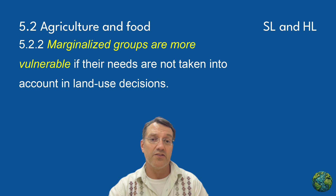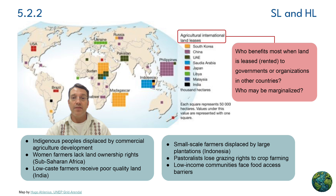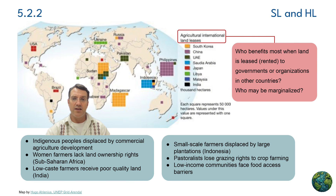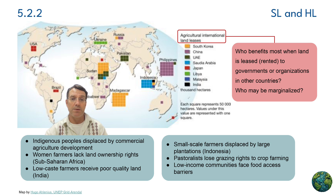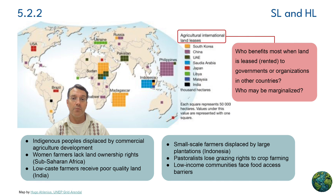This isn't just about fairness — it's about understanding how land use decisions affect different people differently. This map shows international land leases, essentially land grabbing, where governments or organizations from one country lease large areas of agricultural land in another country. The key questions we need to ask are who benefits most from these arrangements and who gets marginalized. Often we'll see indigenous peoples displaced by commercial agricultural development, women farmers losing land ownership rights in places like sub-Saharan Africa, and small-scale farmers being pushed out by big plantations. These examples show how global food systems can create winners and losers.